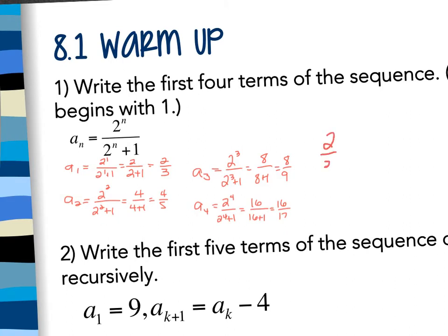You want to list them in the order in which you got them. So it would be 2 thirds, then 4 fifths, then 8 ninths, then 16 seventeenths. And that would be the first four terms in the sequence.